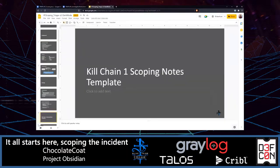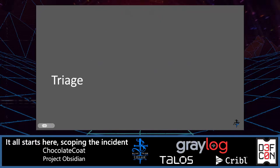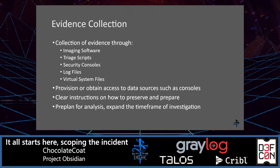Now we're going to jump into triage. The first portion of triage is evidence collection. You have your scoping notes, now it's time to move into getting some triage analysis done to establish some leads. Collection of evidence has changed quite a bit — before, imaging and dead box forensics was the key, but now you have imaging software, different types of triage scripts, security consoles, log files, and even virtual system files. One important thing from the console standpoint is obtaining and providing access to these different consoles — you should have a process to provide access to individuals such as an external firm or a different department that may be supplementing.